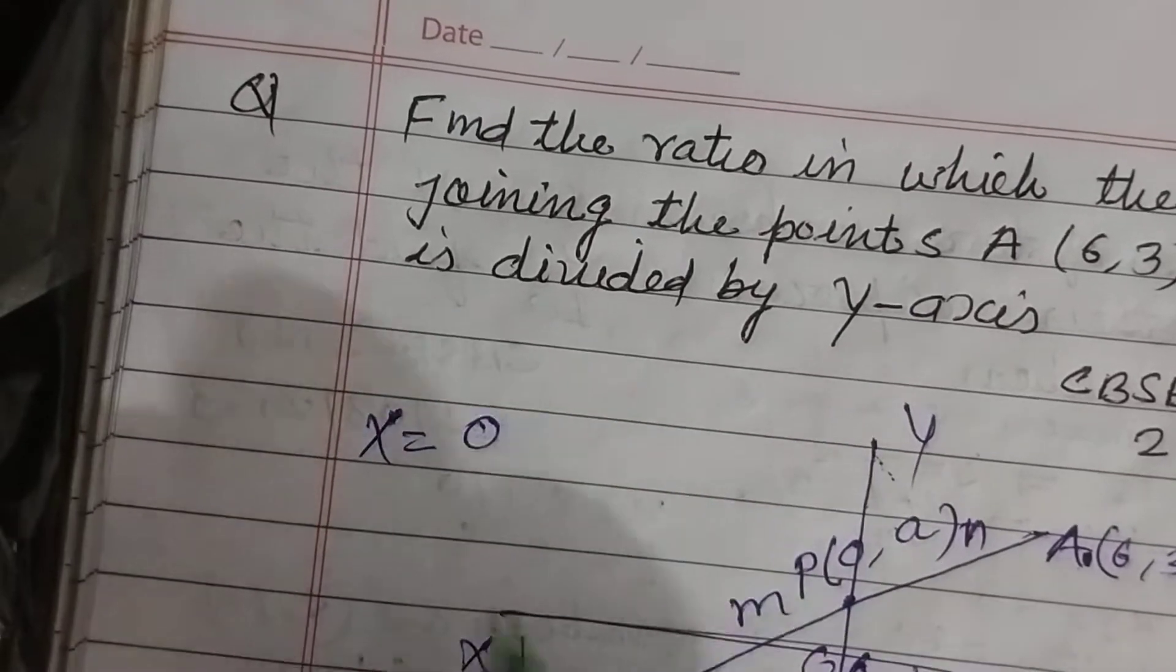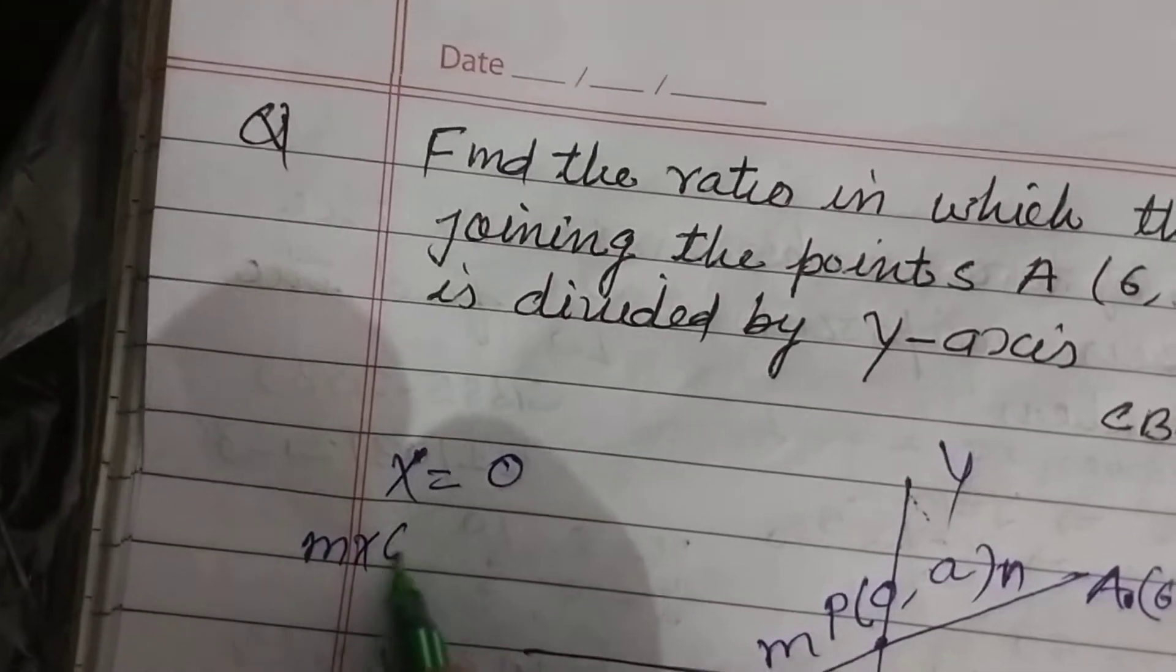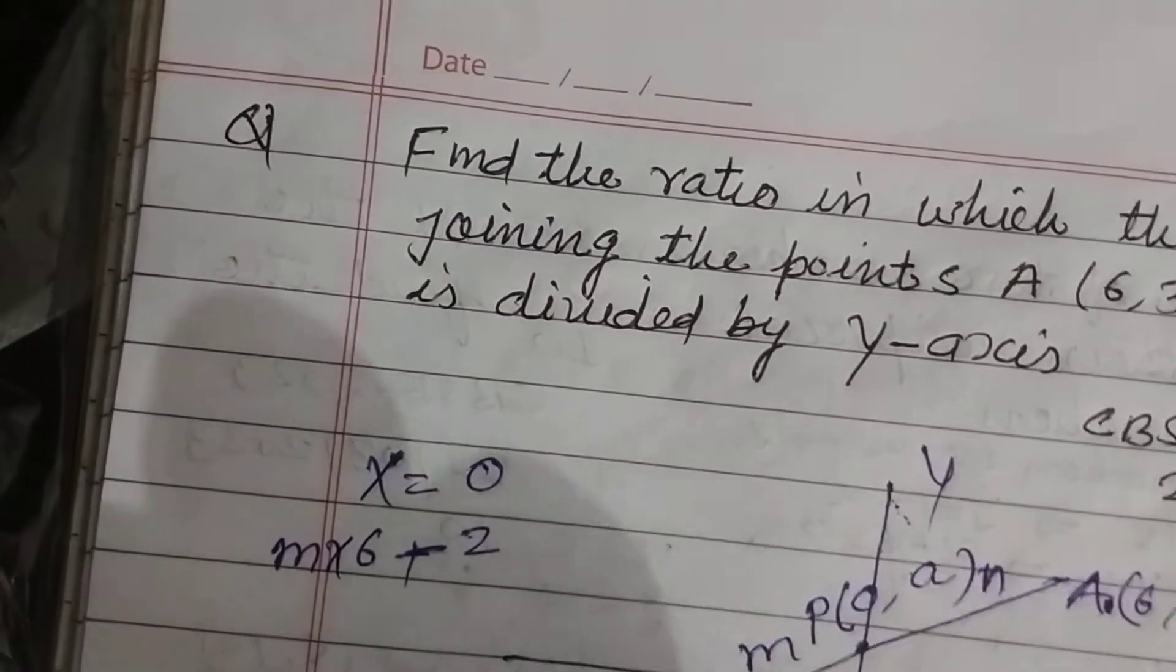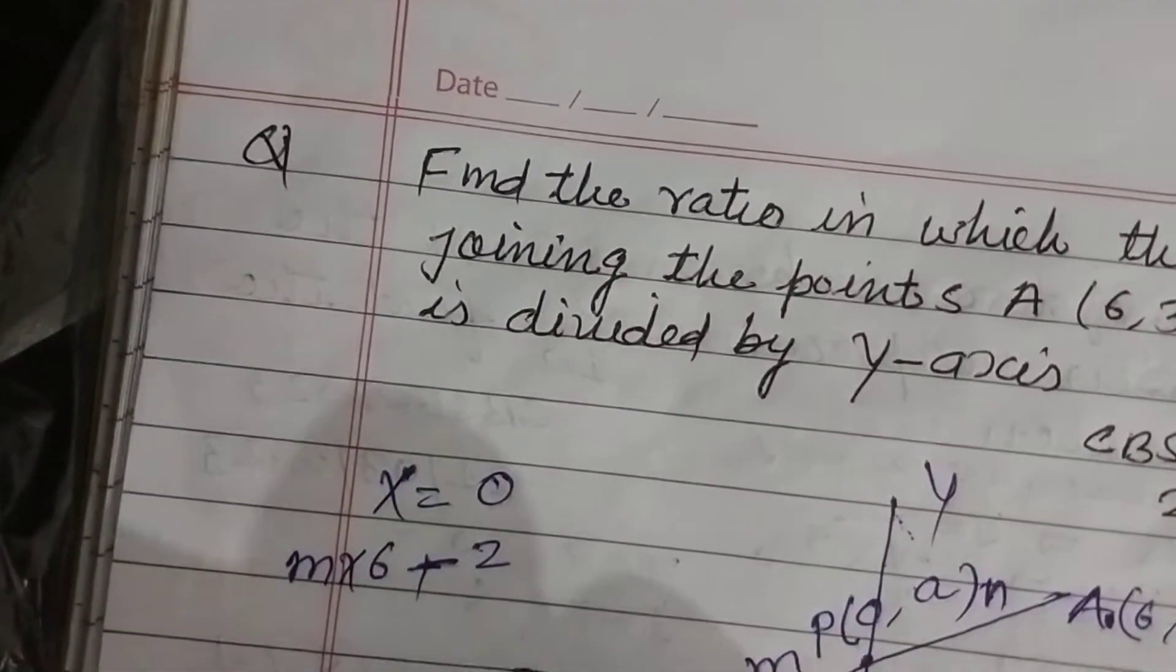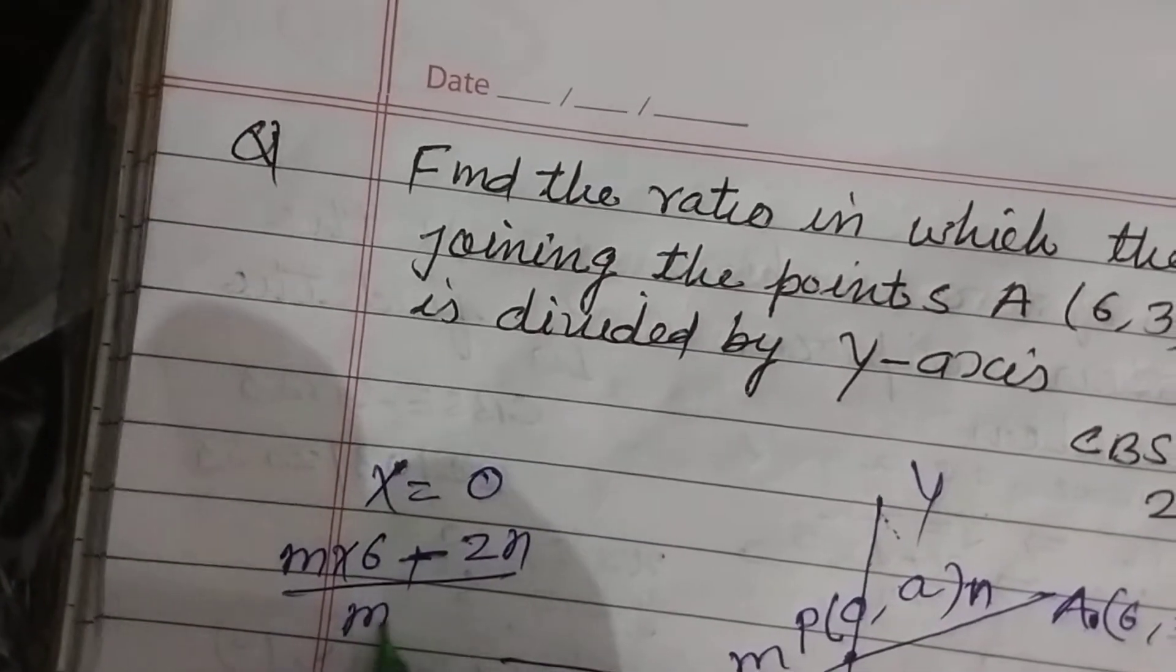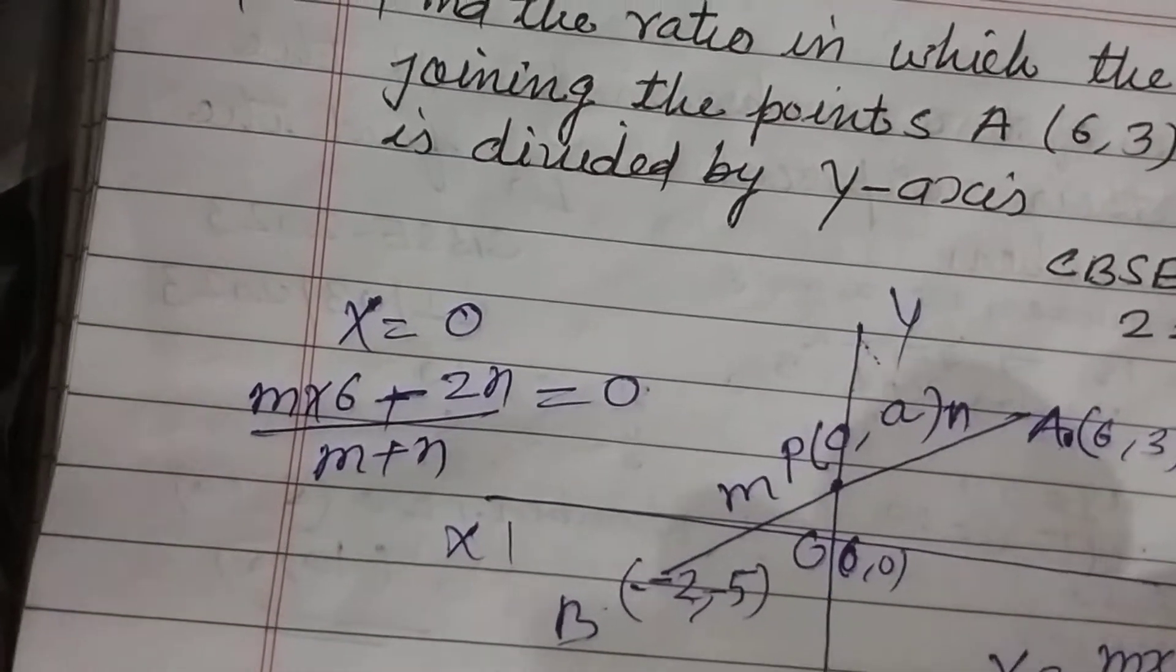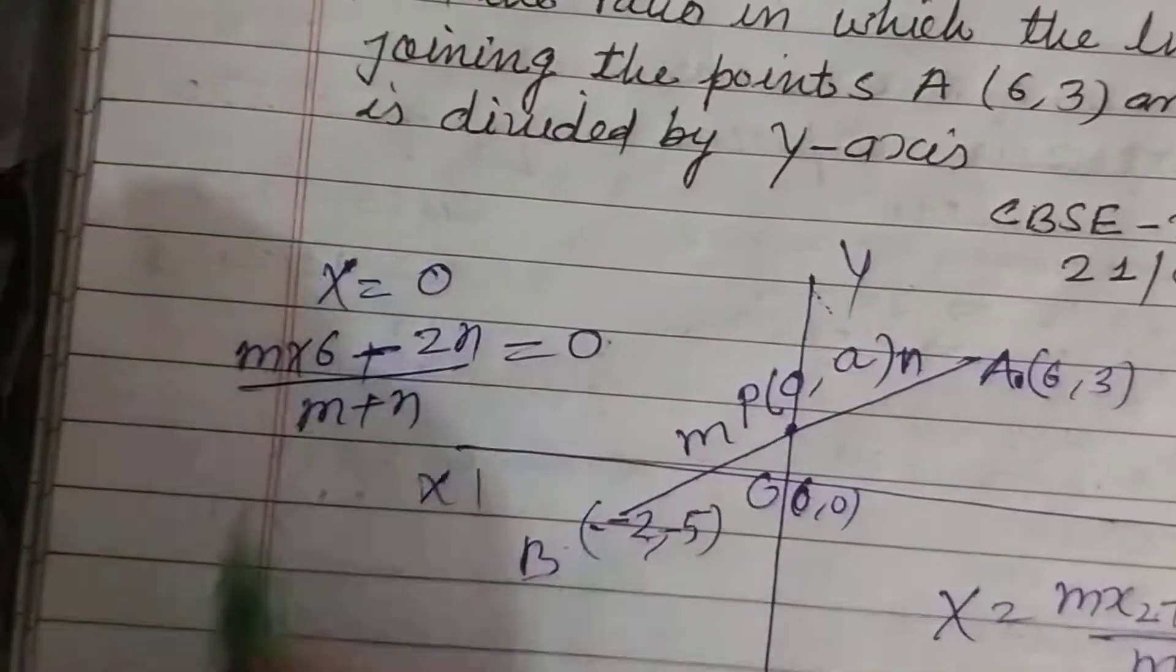So, Mx2 plus Nx1 upon M plus N equal to 0. You know that x equal to Mx2 plus Nx1 over M plus N. Here x is 0.